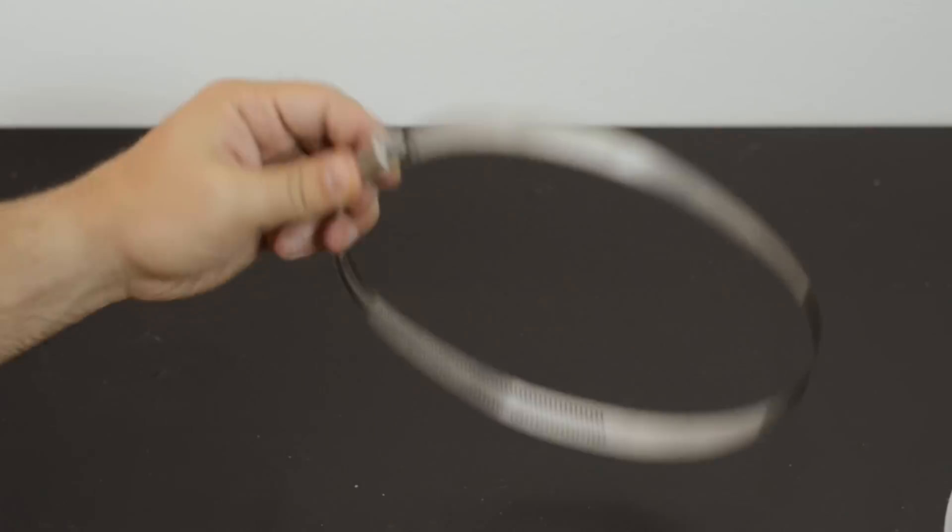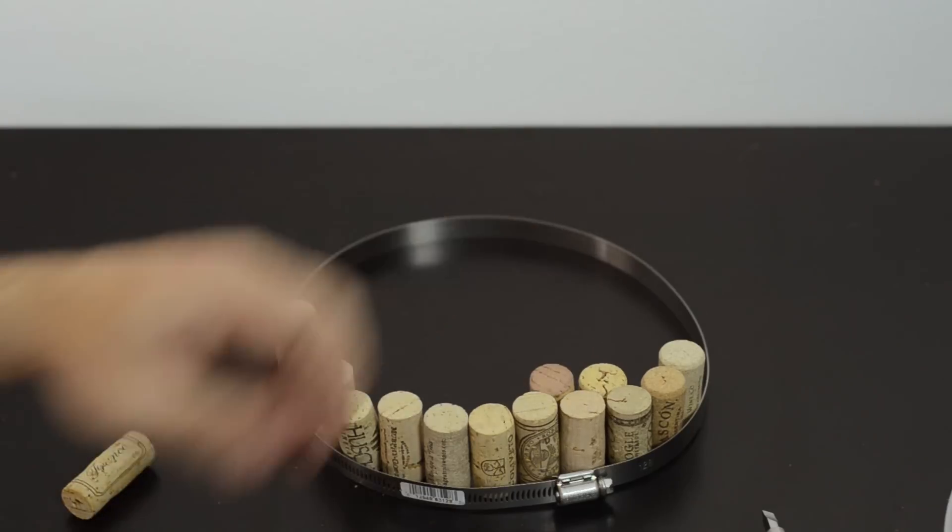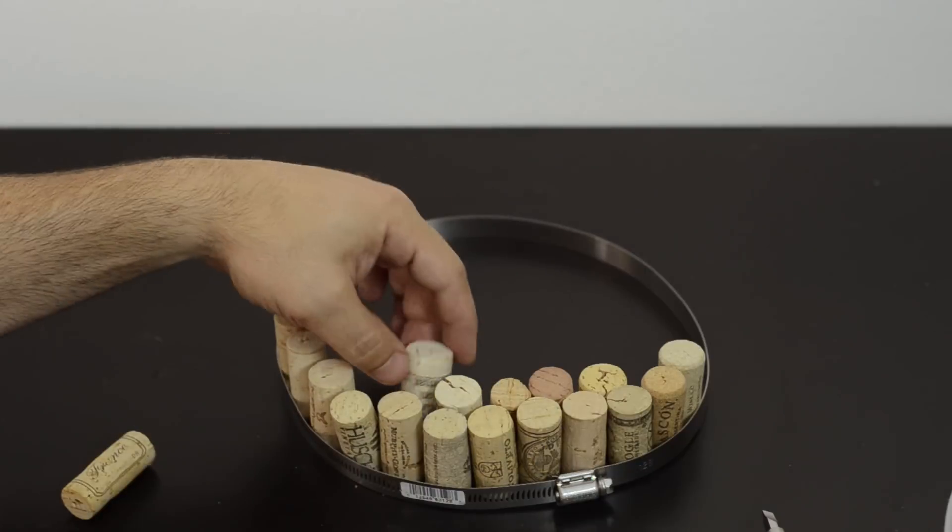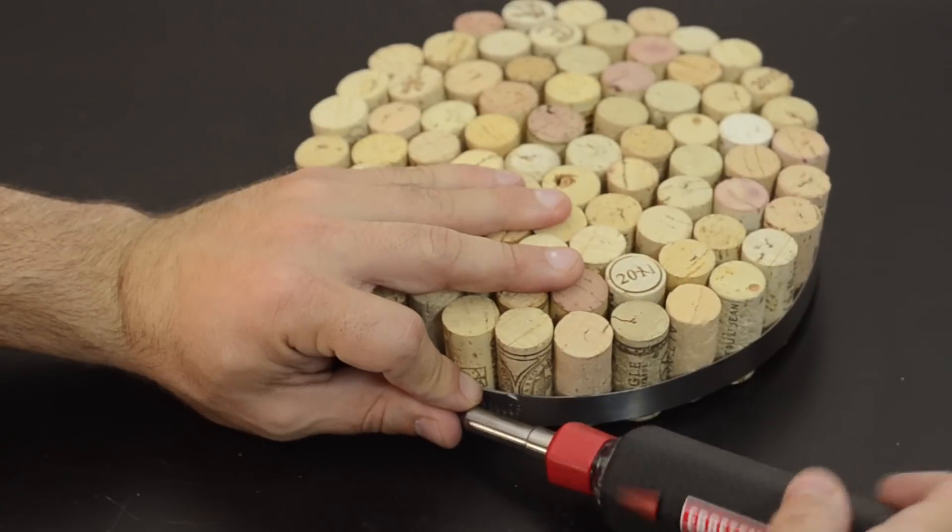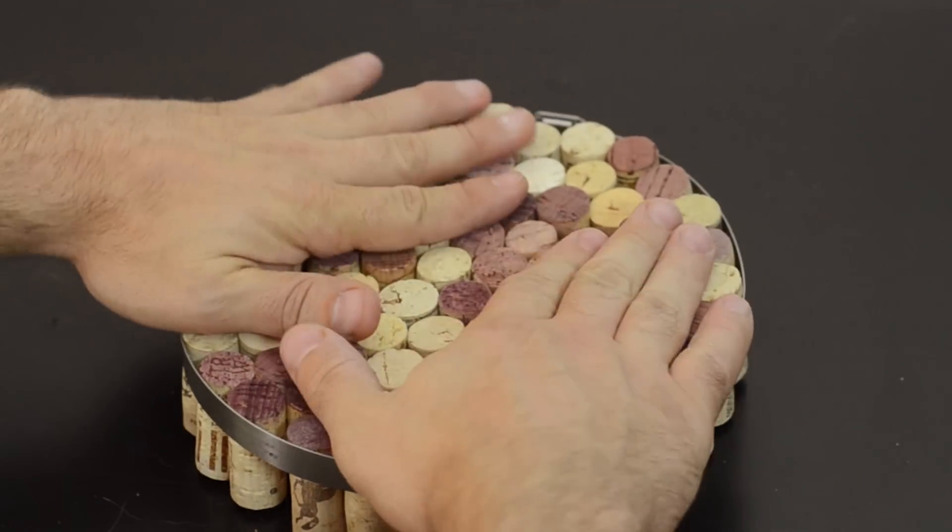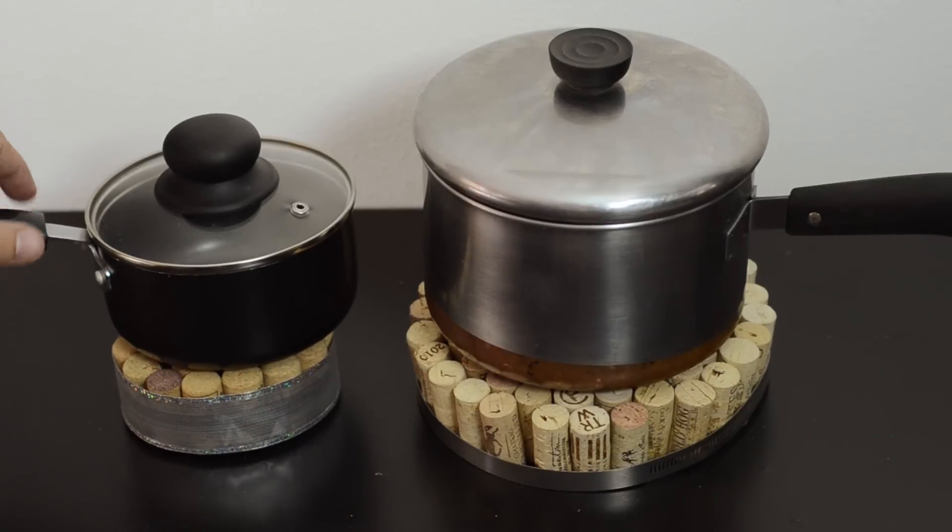Okay, let's make a hot plate. Figure out the size of hot plate you want. Place a bunch of corks inside of a hose clamp. We're going to cover a standard sized cooking pot here. Once everything's in there, just tighten it up until all the corks are nice and sturdy. Then toss a pot on top and you're all set.